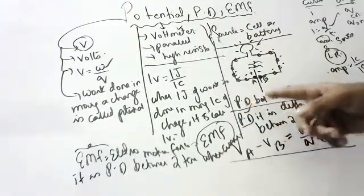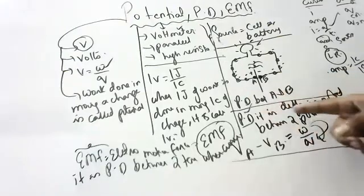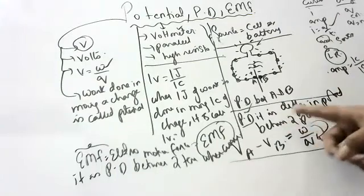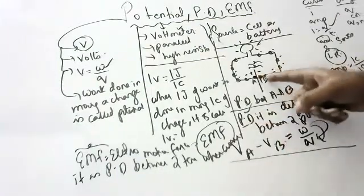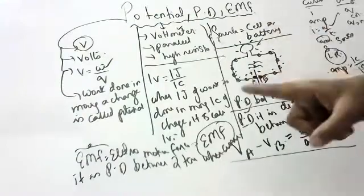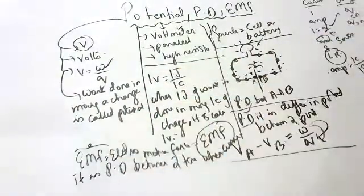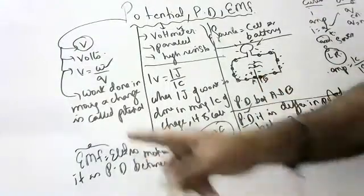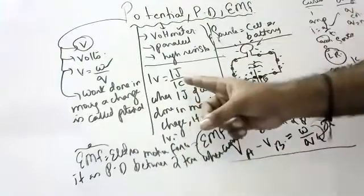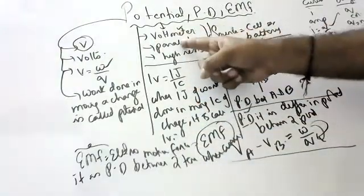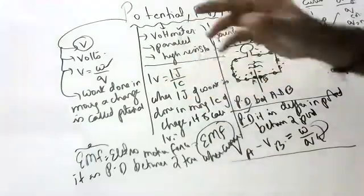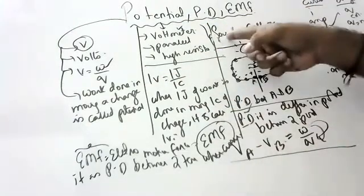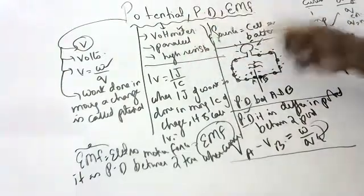Potential difference: it is the difference in the potential between two points. If current is flowing it is potential difference; if current is not flowing it is electromotive force. The most important question here is about the voltmeter — how it is connected. Many children confuse the source of potential and how it is measured, and write wrong answers.